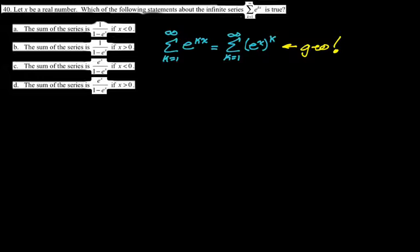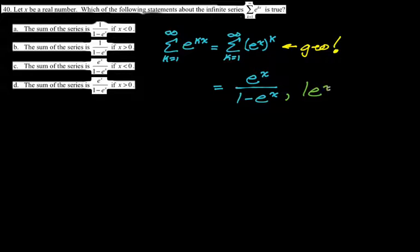The sum of this is the first term over 1 minus the ratio. We take K=1 and plug it in to get e^X, so the sum is e^X over (1 minus e^X). This converges provided that the absolute value of e^X is less than 1. Keep in mind the lower bound was K=1; if K had equaled 0, the first term would have just been 1. I always think of it as the first term over 1 minus the ratio — just take that bottom number and plug it in.